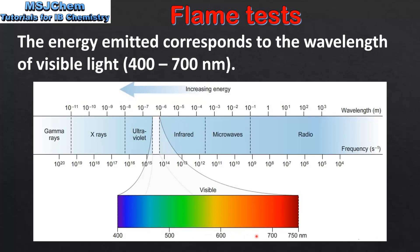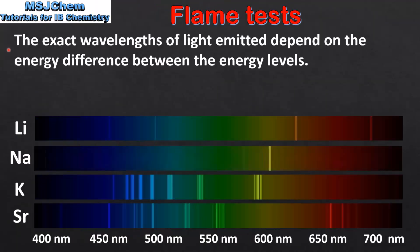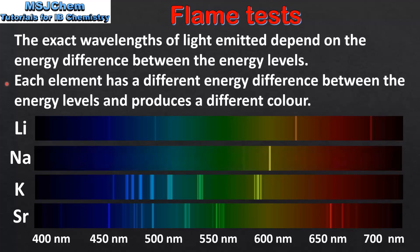These wavelengths are the ones that we see when the electrons transition to lower energy levels. The exact wavelengths of light emitted depend on the energy difference between the energy levels. Here we can see the emission line spectra for lithium, sodium, potassium and strontium. The wavelengths of light emitted are different for each element, which explains why each metal ion produces a different color when heated in the flame. Each element has a different energy difference between the energy levels and produces a different color.